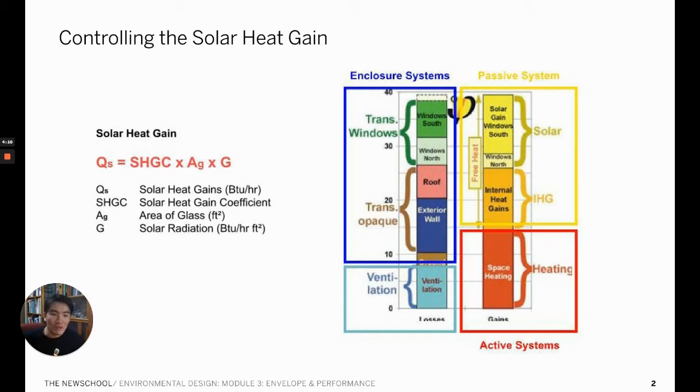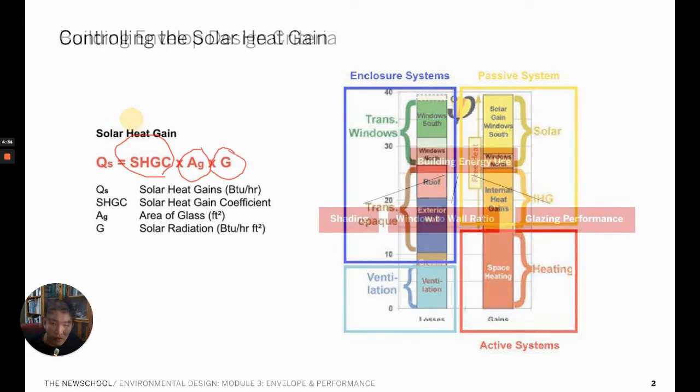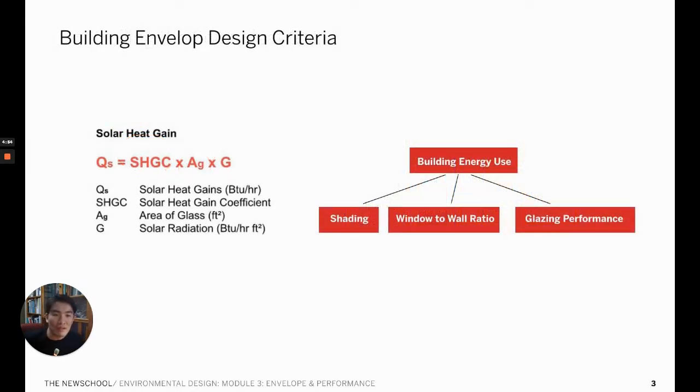Solar heat gain is the combination of three main factors: first, solar heat gain coefficient, which is this portion here; second, controlling the overall area of glass, which is represented as AG here; and lastly, the incident solar radiation, which is represented as G here. These three factors are translated into three major portions of building's envelope design related to the building's energy use.